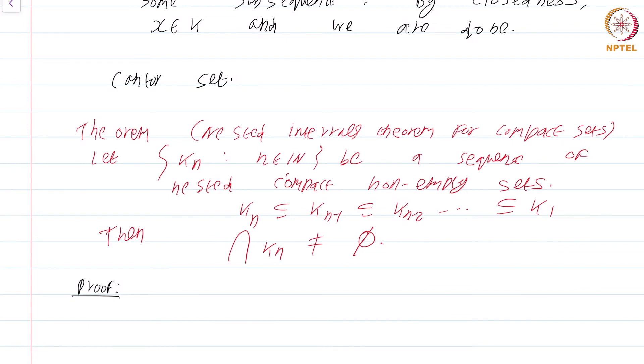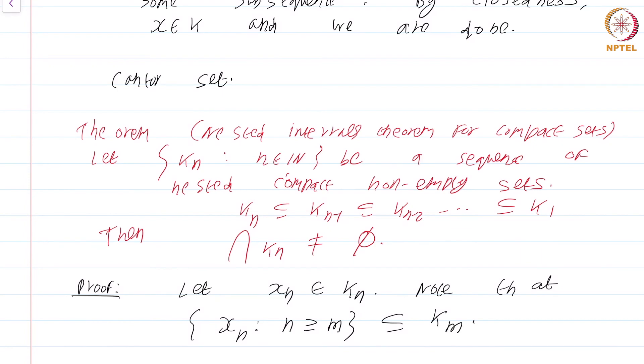What I do is the following. Let x_n be in k_n. Since each one of these sets is non-empty by hypothesis, I can find an element x_n in k_n. Note that {x_n : n ≥ m} is a subset of k_m. Why is this? Because these are nested intervals. So in particular, this entire x_n is in k_1 for all n.